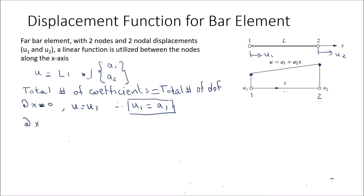Next, at x equals L, U is equal to U2. Therefore, U2 equals A1 plus A2 times L. Since A1 equals U1, we can solve for A2, and A2 equals (U2 minus U1) divided by L.